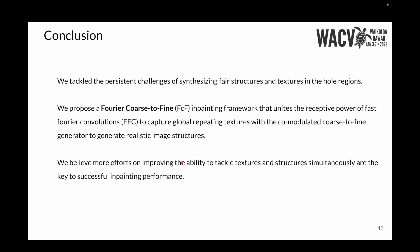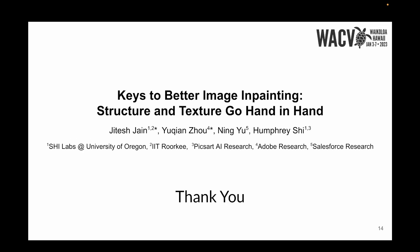In this work, we tackle the persistent challenges of synthesizing fair structures and textures with a single inpainting model. We propose a Fourier co-mod inpainting framework that unites the receptive power of fast Fourier convolutions to capture global repeating textures with the co-modulated generator to generate realistic image structures. We believe more efforts on improving the ability to tackle textures and structures at the same time are the key to successful inpainting performance. Thank you.